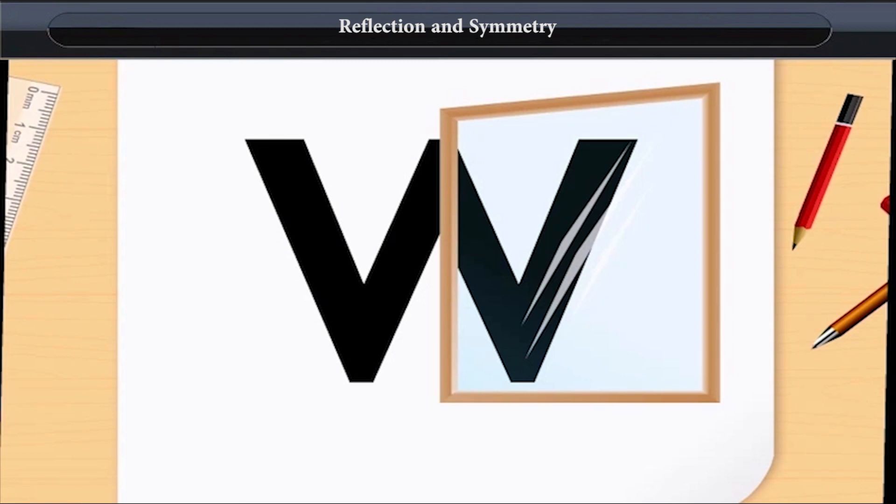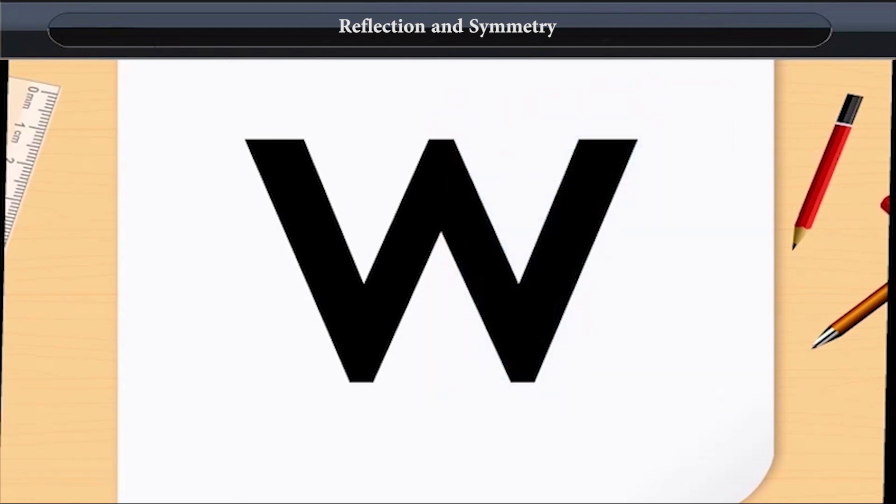You can imagine that the mirror is invisible and only the letter W and its image could be seen. We can see that the letter W and its image are symmetrical in relation to the mirror line.